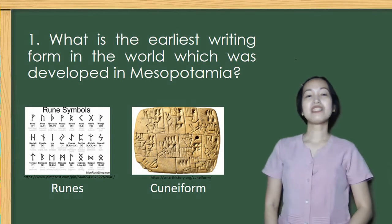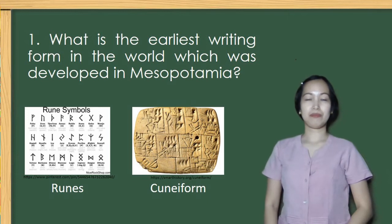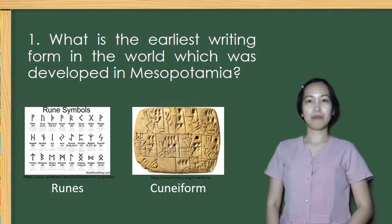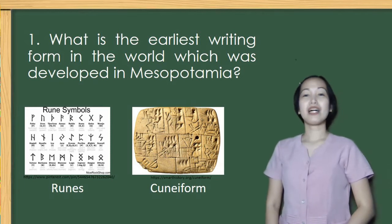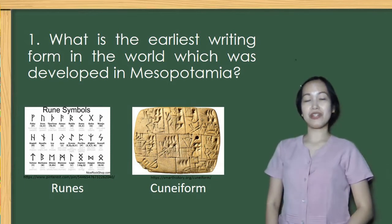What is the earliest writing form in the world which was developed in Mesopotamia — runes or cuneiform? You got it right. The correct answer is cuneiform.